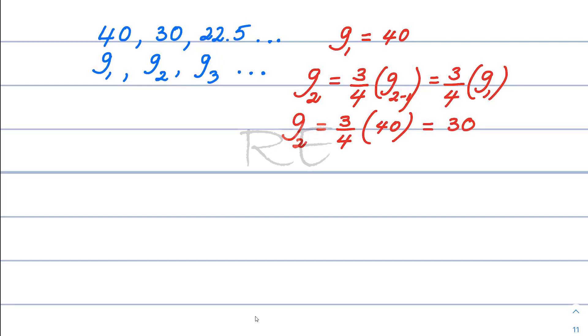Now g3 will be 3 fourths of g3 minus 1, which is 3 fourths of g2. Let's replace g2 by 30. So g3 is 3 fourths of 30, which is 90 divided by 4.